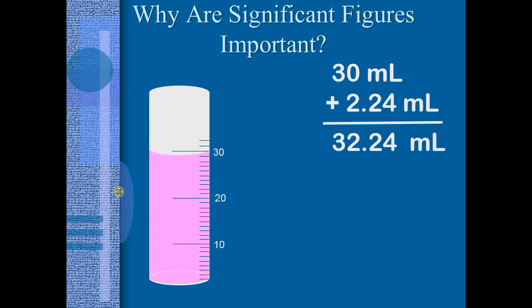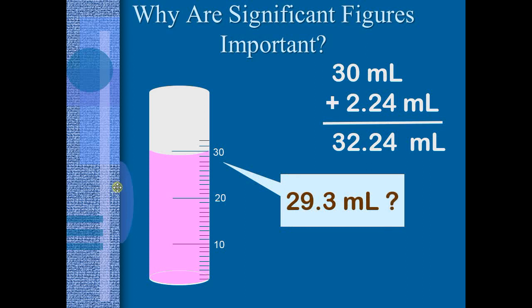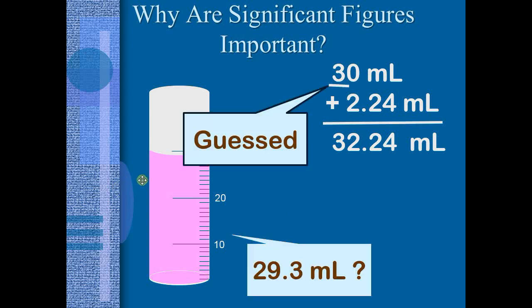And so we pour both amounts of water into our cylinder, and we might find there's only 29.3 milliliters. Now how can this be? You're telling me that 30 plus 2.24, and we got 29.3? Well, if we think about sig figs, and if we think about the level of guessing in those earlier two measurements, we realize that that 30 milliliters was not a very exact measurement. We were guessing at the 3. We might have looked at that beaker before and said, maybe it was 20 milliliters. Maybe it was 40 milliliters. The 30 is a very, very guessed number.